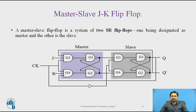A master-slave flip-flop is a system of two SR flip-flops — one designated as the master and the other as the slave. It is basically a combination of two JK flip-flops connected in series. The output from the master flip-flop is connected to the two inputs of the slave, whose output is fed back to the master's input. The circuit also includes an inverter connected to the clock pulse so that the inverted clock pulse is given to the slave flip-flop — if Cp equals 0 for the master, then Cp equals 1 for the slave.